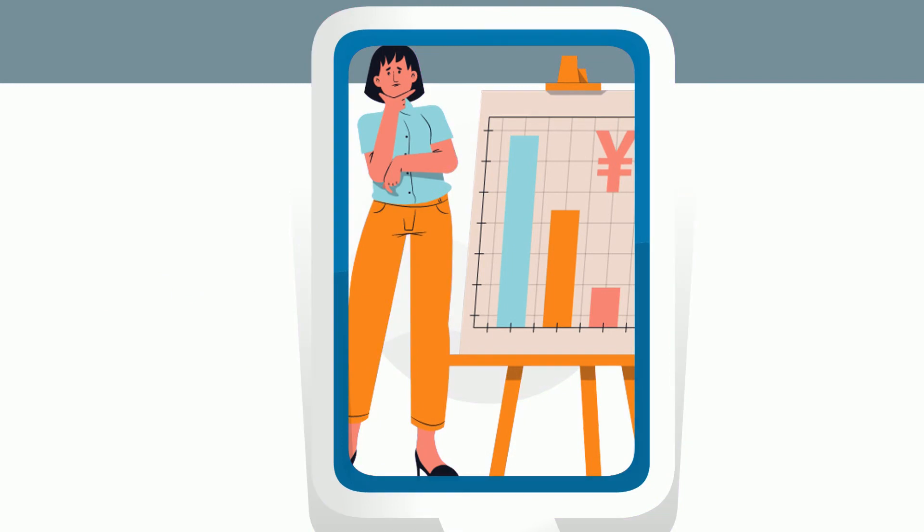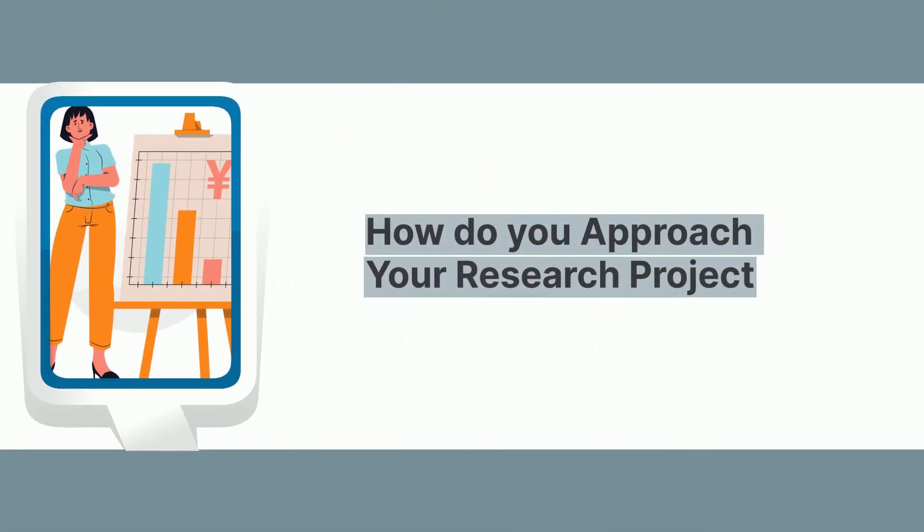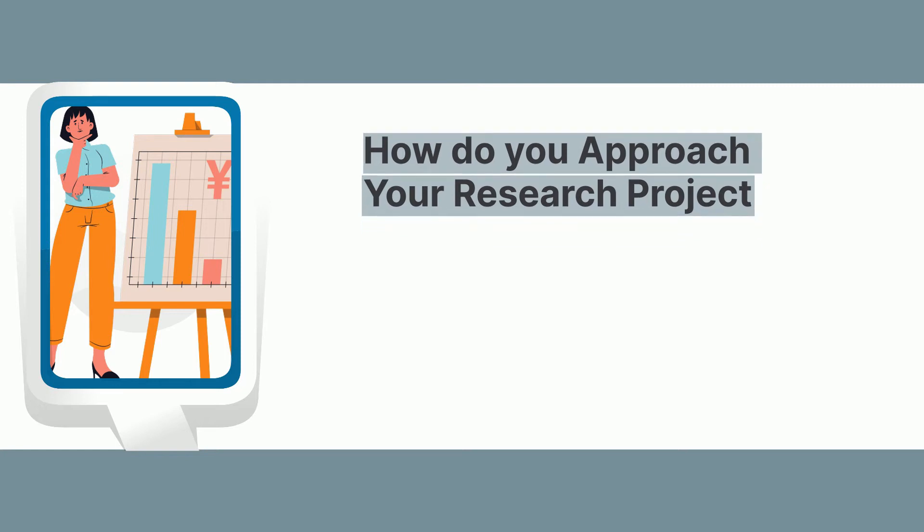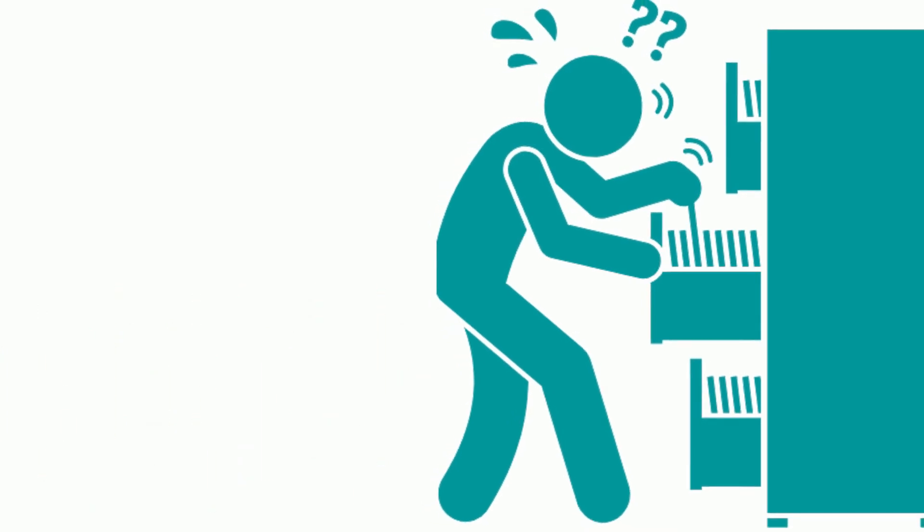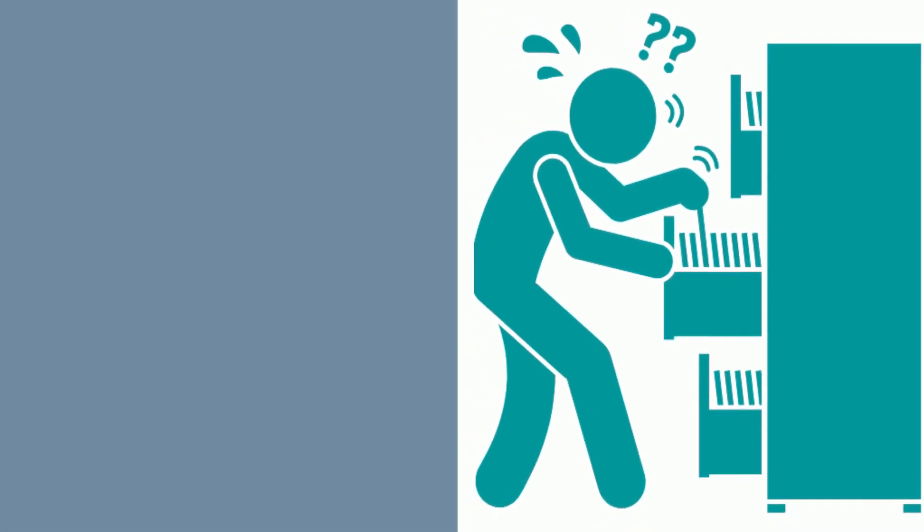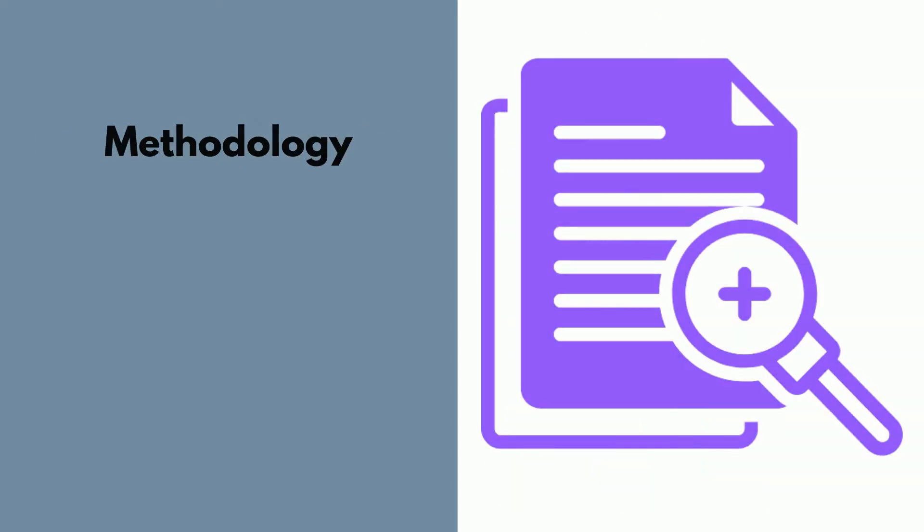Now the next question is how do you do that? How do you approach your research project in a way that makes it most likely that you will have an interesting question and a compelling answer? Here's where it very often goes wrong for people. Because very often people think that they first need to think of an interesting question, and then when they have an interesting question, the next thing they focus on exclusively is just the methodology.